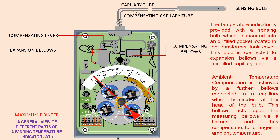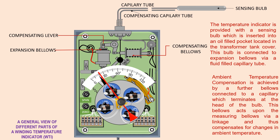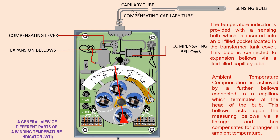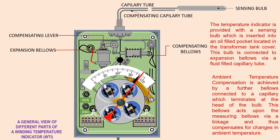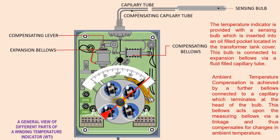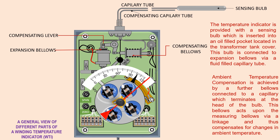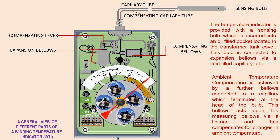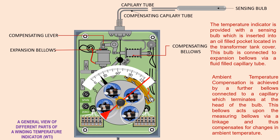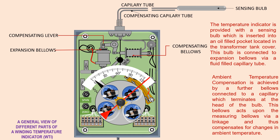During deflection of the main pointer towards higher temperature along the scale, the maximum pointer is accompanied with it up to the maximum temperature attained. The maximum pointer only indicates the maximum temperature that was attended by the main pointer. When the temperature of the oil or winding decreases, the main pointer comes down but the maximum pointer remains steady at that position. The maximum pointer can be adjusted to set at anywhere on the scale by hand.